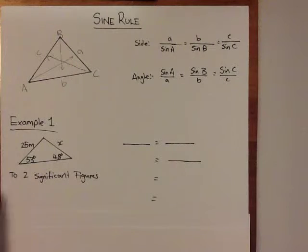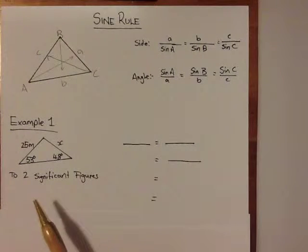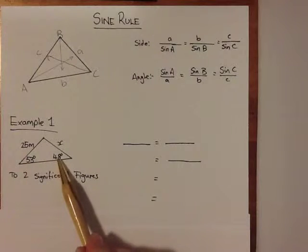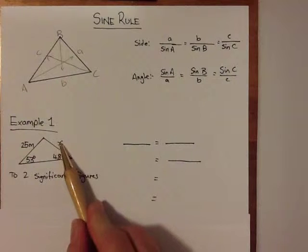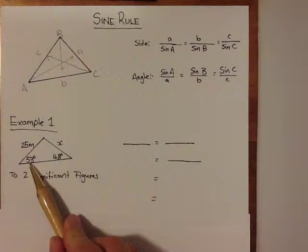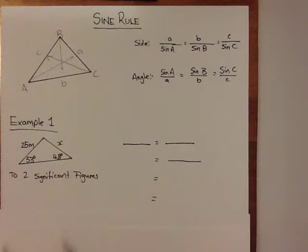In example 1 here, we can see we have four pieces of information, two angles and two sides. Because of that, we know we're going to use the sine rule. Side X is opposite angle 53, and 25 is opposite angle 48 degrees.